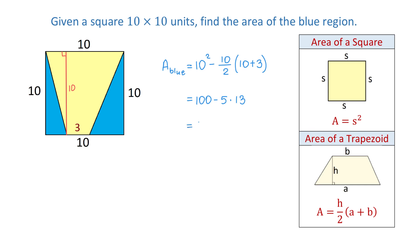5 times 13 is 65, and 100 minus 65 is 35. So here we have the area of the blue region, and that is 35 square units. Thank you for watching.